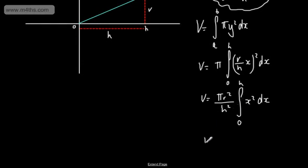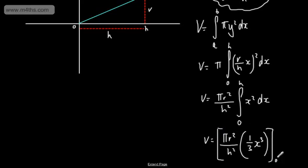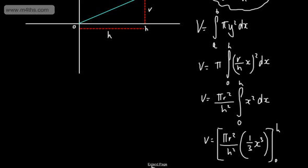So what we're going to get then is the volume will be equal to π r squared over h squared. Now, if I integrate x squared with respect to x, I'm going to get 1/3 x cubed. So I'm going to get 1/3 x cubed, and we're interested in evaluating this from 0 to h. Now, if I sub these in, what we're going to end up with is the following. The volume will be π r squared over h squared. Sub in h, I'm going to have 1/3 h cubed. Sub in 0, I'm going to have 0.